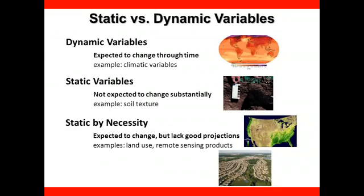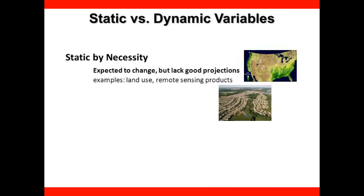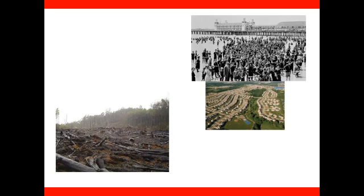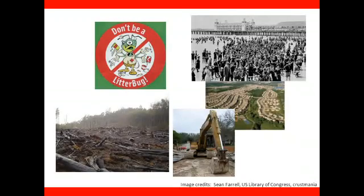In other cases, we expect that there will be changes yet future scenarios are not available or are highly uncertain. This is particularly relevant for remotely sensed variables such as land cover classifications and measures of productivity. Predicting changes in land cover is difficult because land use patterns result from many factors including physical properties of the environment, resource demand, human population density, available technology, in addition to an array of laws, policies, mores, and attitudes of people towards their physical environment. These factors are ever-changing and can cause existing trends and patterns of land use to shift rapidly and sometimes in unexpected ways.